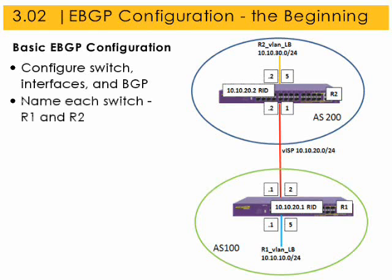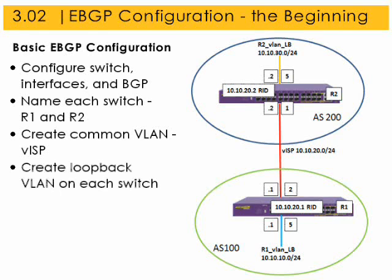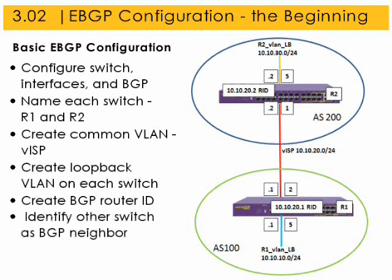We will name each switch R1 and R2. Create a common VLAN, VISP. Create a loopback VLAN that only each switch can access. Create BGP router IDs for each switch, and identify the other switch as the BGP neighbor.